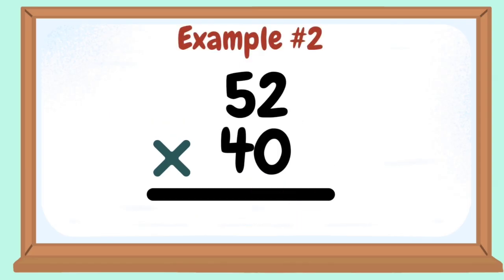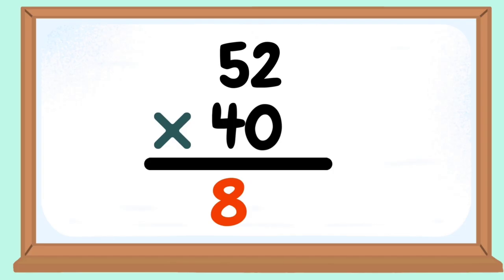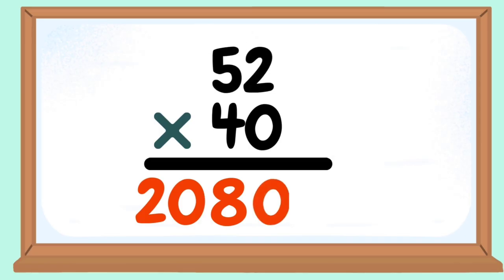Example number 2: 52 times 40. 4 times 2 equals 8. 4 times 5 equals 20. Then add the zero. 2,080 is our product.